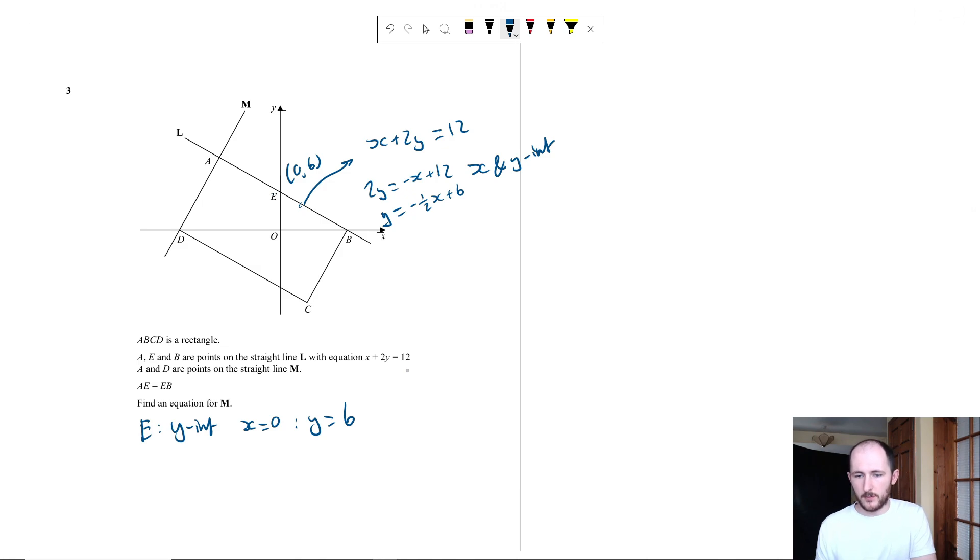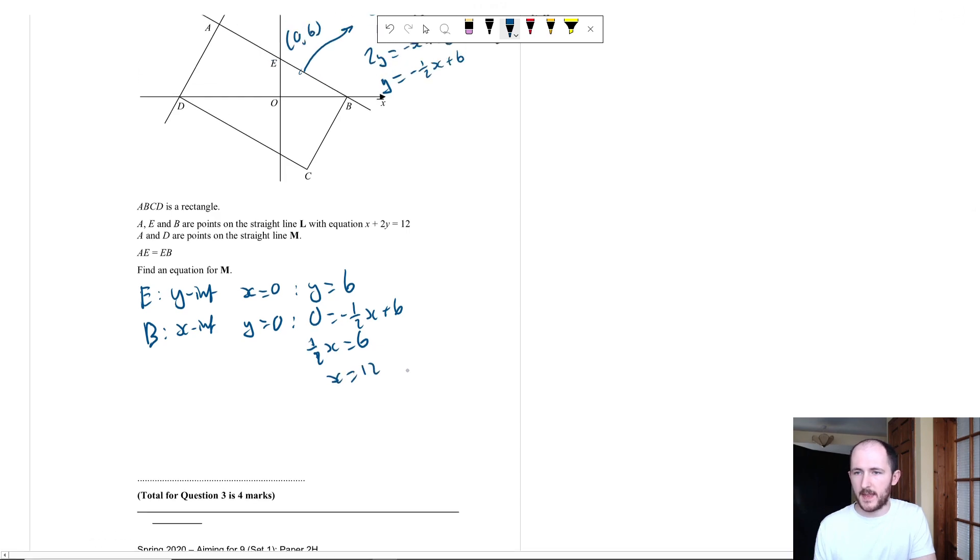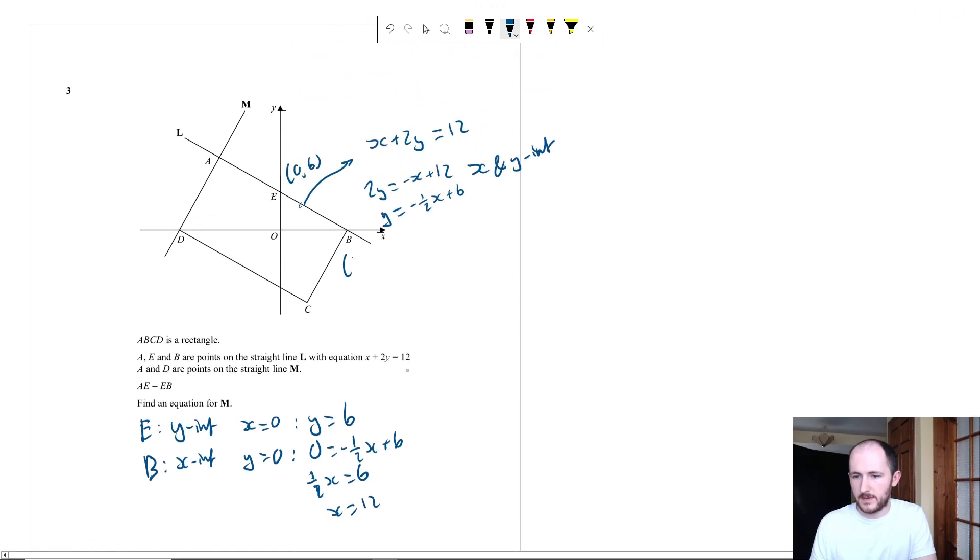Then for point B, that is just the X intercept. So we're going to sub in Y equals 0. So that gives me 0 equals minus 1 half X plus 6. I'm going to move the minus 1 half X to the left-hand side, which gives me 1 half X equals 6, which means X equal to 12, so the coordinates there are 12 and 0.